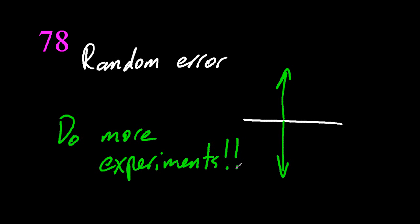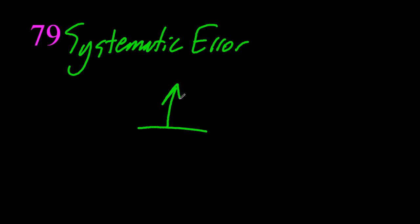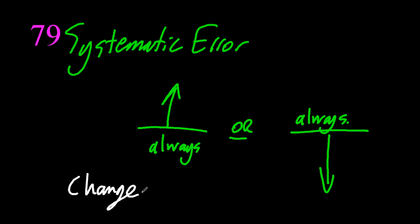If you have a random error, your data's going to be too high or too low. That's going to be kind of an even split between too high and too low. Do more experiments. Systematic error, your data's always going to be too high, or it's always going to be too low. You need to fix your equipment, or change your equipment, to fix this systematic error.